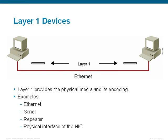Layer one is only responsible for carrying an electrical signal from one device to the next device, and therefore they do not require any kind of intelligence. Devices that operate within layer one include ethernet and serial cables. You also have some equipment such as a repeater or a hub.